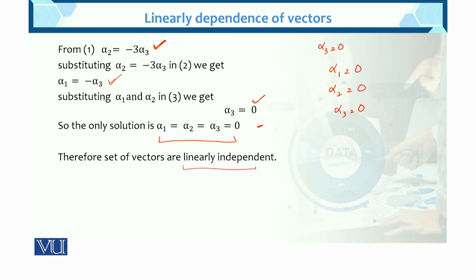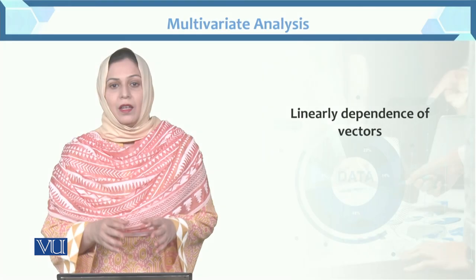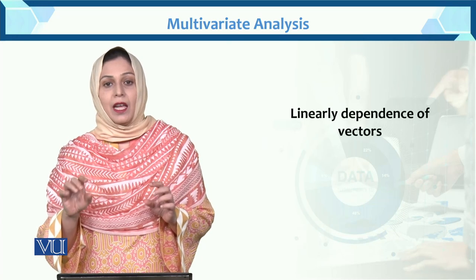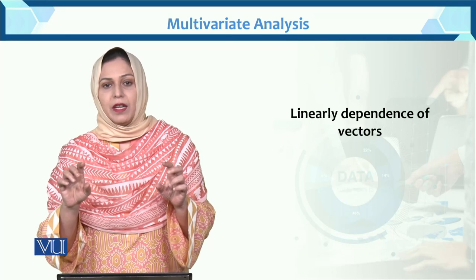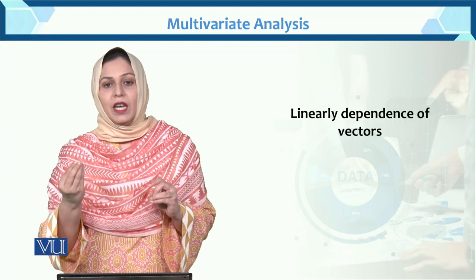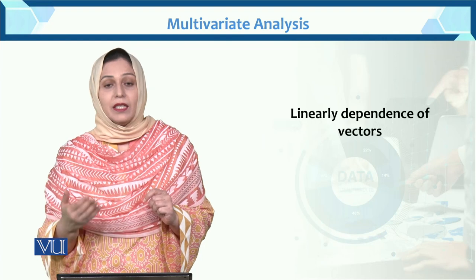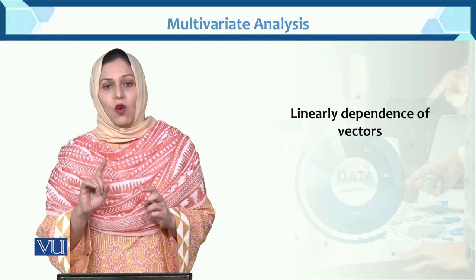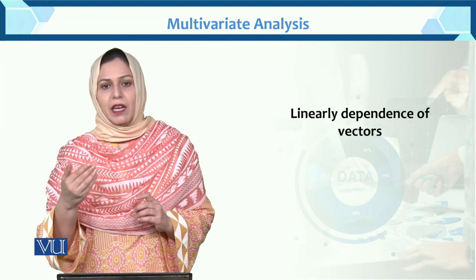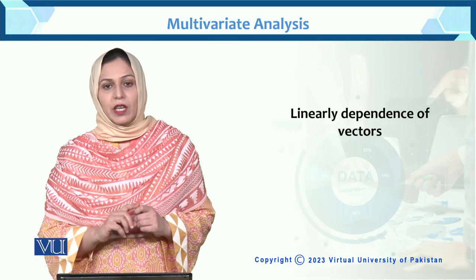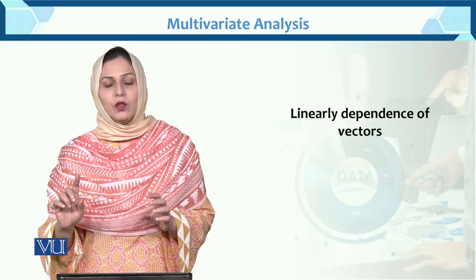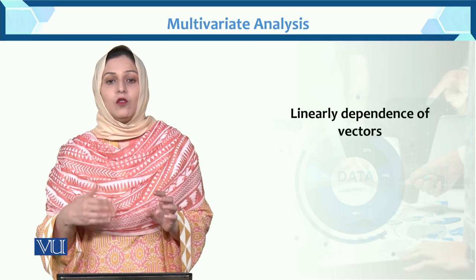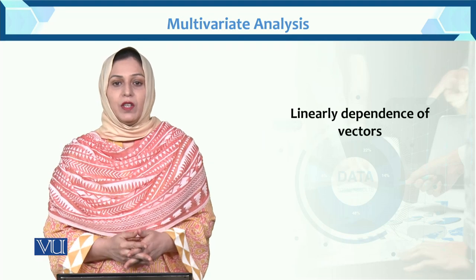To summarize: if we have a linearly dependent case, the equation must be satisfied and the real numbers have solutions other than zero — not only the zero solution. But in the independent case, we have only the solution where alpha 1, alpha 2, alpha 3 are all equal to zero. This is the example of linear dependence and independence of vectors.